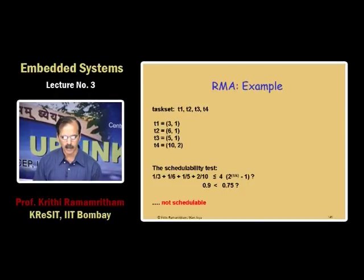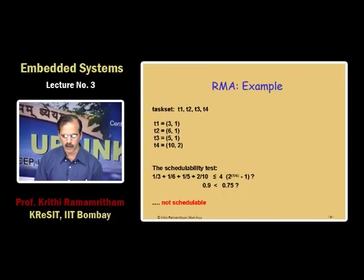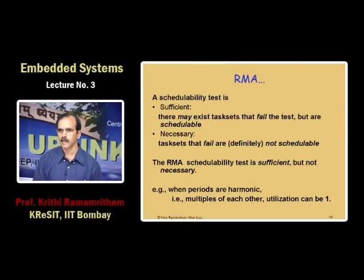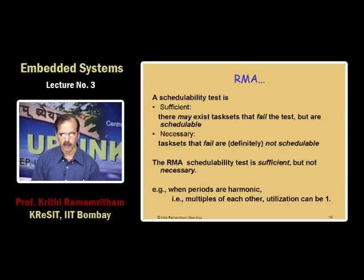The other more complicated approach is exact analysis. Consider 4 tasks with periods 3, 6, 5, and 10. The utilization sums to 0.9, but the bound for n=4 is 0.75, so the sufficient condition does not hold. However, this does not imply the task set is not schedulable — because this is a sufficient test, not a necessary one. One option is to change the periods; the other is to analyze this task set on an instance-by-instance basis.